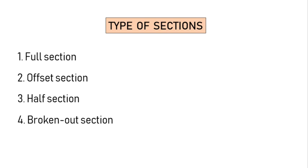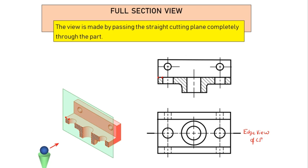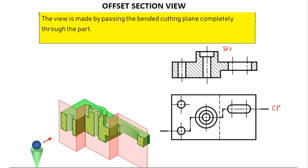Now let us look at each section type. We have already seen the full section. If the object is symmetrical, we can use the full sectional view. The view is made by passing a straight cutting plane completely through the part. For the offset section, the view is made by passing a bent cutting plane completely through the part, even though it is bent, allowing us to see internal features that are not in a straight line.